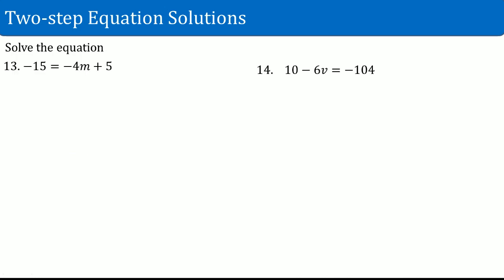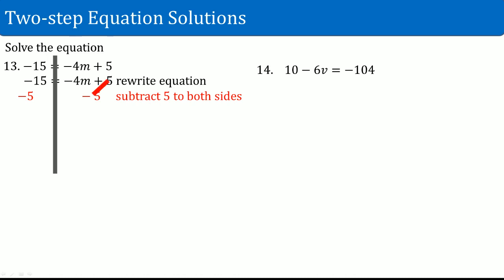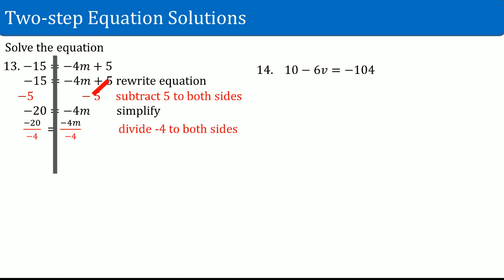Number thirteen: negative 15 equals negative 4m + 5. Rewrite the equation and draw the line straight down. What is attached to the variable: negative 4 multiply and a plus 5. Deal with the outermost thing, the plus 5 — subtract 5. Plus 5 and subtract 5 cancel out, leaving negative 4m on the right-hand side. On the left-hand side, negative 15 minus 5 is negative 20. Divide by negative 4 on both sides. Negative 4 divided by negative 4 cancels out, leaving m. On the left-hand side, negative 20 divided by negative 4 is 5.